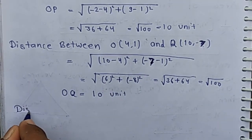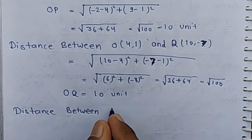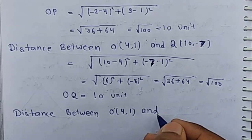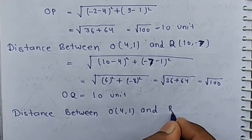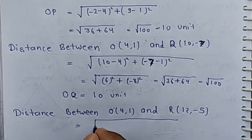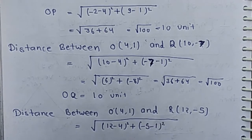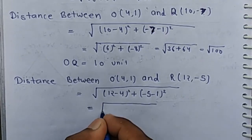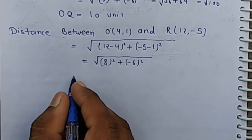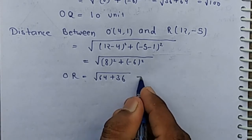Now distance between O(4,1) and R(12,-5) is square root of (12-4)² plus (-5-1)². 12 minus 4 means 8 squared, minus 6 squared. Then OR is 64 plus 36 means 10 unit.